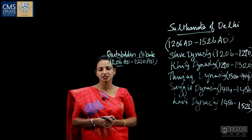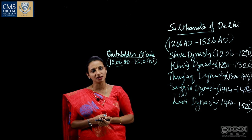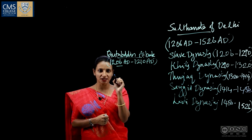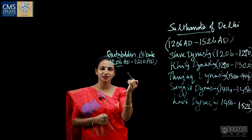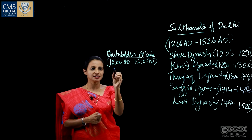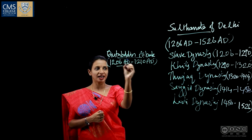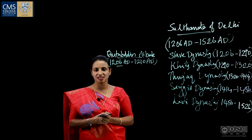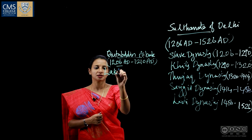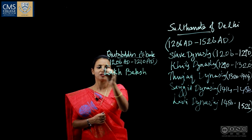Qutbuddin Aibak established the Slave Dynasty and became its founder. He was a very benevolent ruler and came to be known as Lakhbakhsh, meaning 'giver of lakhs.'